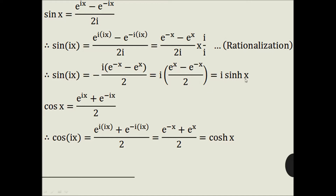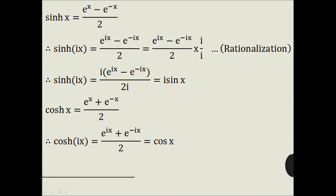Hence sin(ix) = i · sinh x. Similarly, we can prove that cos(ix) = cosh x. Now in the sinh x formula, replace x by ix. Therefore sinh(ix) = (e^(ix) − e^(−ix)) / 2i. After rationalization, we get sinh(ix) = i · sin x. Therefore sinh(ix) = i · sin x. Similarly, we can prove that cosh(ix) = cos x. Kindly make note of these standard results, which are useful while solving problems.